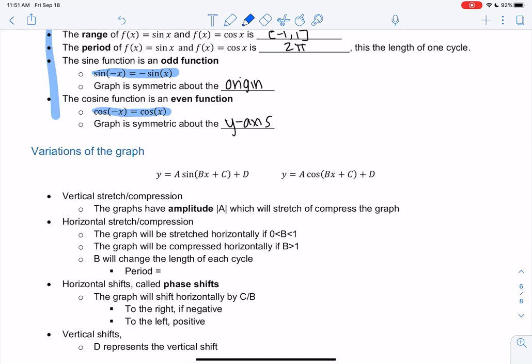Amplitude was how tall the graph was, and that has to do with those vertical stretches or compressions. So it'll stretch or compress. As a gets bigger, it stretches. If a is smaller, it compresses.